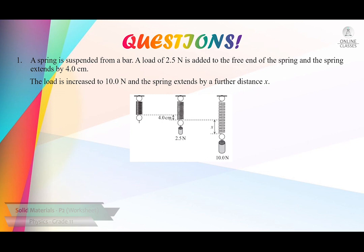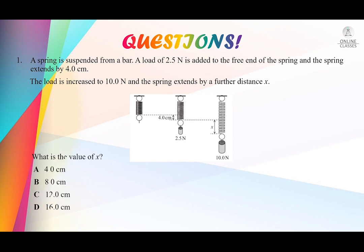You can see that the spring extended by further distance x. Students, you have to check the diagram very carefully. The extra extension is given as x. The question is asking: what is the value of x? They are not asking the complete extension — they are asking for the extra extension part. They have given 4 answer choices.